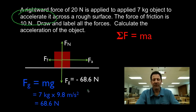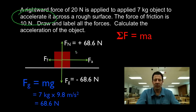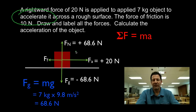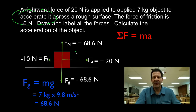We know the normal force has to be equal and opposite, so we put plus 68.6 Newtons for the normal force. The applied force is 20 Newtons, positive to the right, and the friction force is 10 Newtons negative — to the left. Negative is just the direction of the force; it's a force in a negative direction.